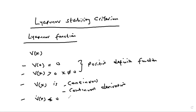In stability analysis using the Lyapunov stability criterion, it is important to note that if a Lyapunov function exists for any given control system, that system is stable. Conversely, for any given system which is stable, there exists a Lyapunov function for that system.